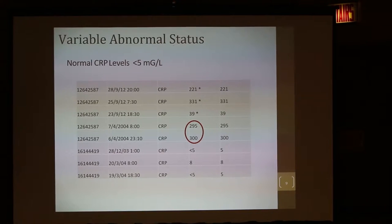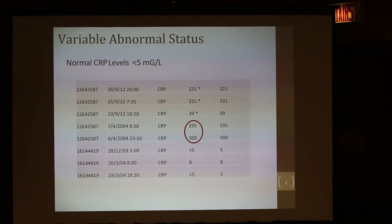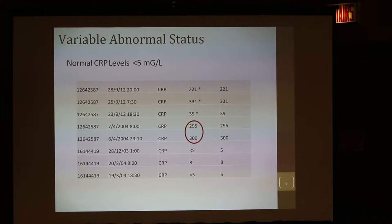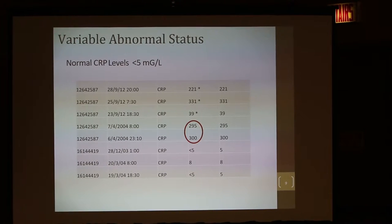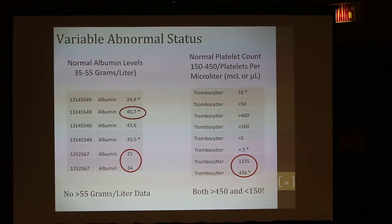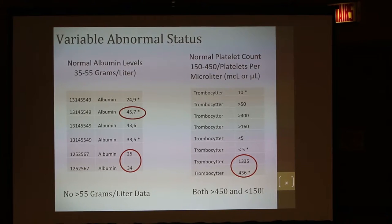Not all blood tests were flagged as normal and abnormal — there was wide variation. For CRP, the normal value is less than five, yet we found some samples where it was not flagged, possibly due to data migration between databases. This same thing was true for albumin and platelet levels. The normal albumin range is between 35 and 55 — some tests with normal values were flagged as abnormal, and some abnormal tests were flagged as normal. There was wide variation in platelet flagging as well.